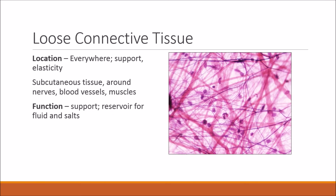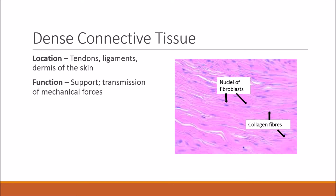Loose connective tissue is found everywhere and is used for support and elasticity. It can be found in subcutaneous tissue, around nerves, blood vessels, and muscles. Its function is for support and as a reservoir for fluid and salts. Dense connective tissue is found in tendons, ligaments, and the dermis of the skin, and is used for support and transmission of mechanical forces.